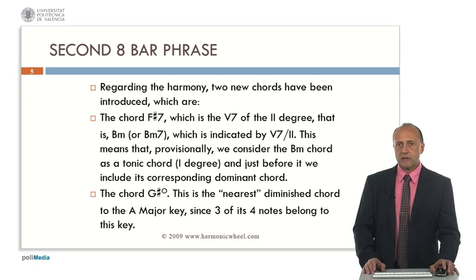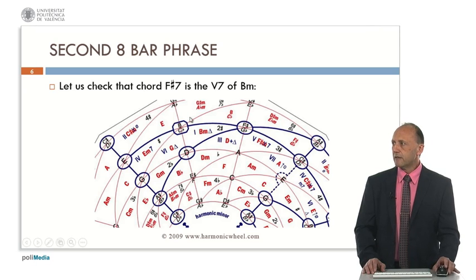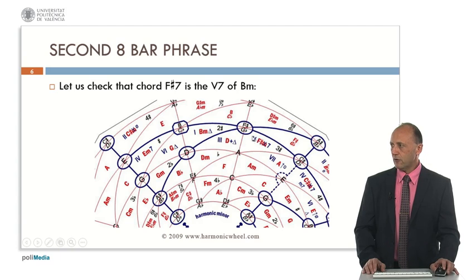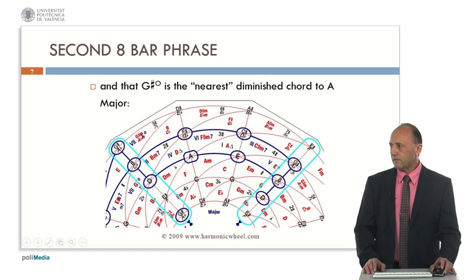The chord G-sharp diminished is the nearest diminished chord to the A major key, as we will see. If we select the B minor harmonic minor key on the harmonic wheel, we can check that its dominant seventh is F-sharp, as we can see here. And if we go back to the A major key and represent the G-sharp diminished chord, it corresponds to a radial line and three of its four notes belong to this key. So this is the nearest diminished chord to A major.